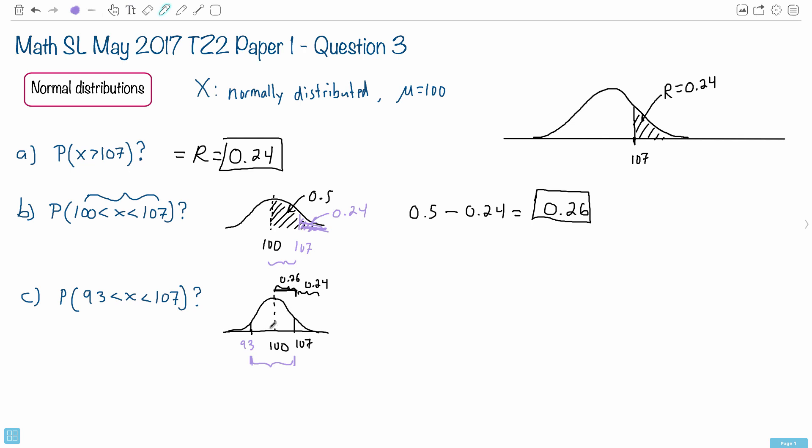So let's look and see if maybe symmetry can help us. If you look at this from 100 to 107, that's 7 units to the right. And if we go 7 units to the left, it's 93. In other words, from symmetry, this is the almost magical part, we know this then. This is also 0.26.